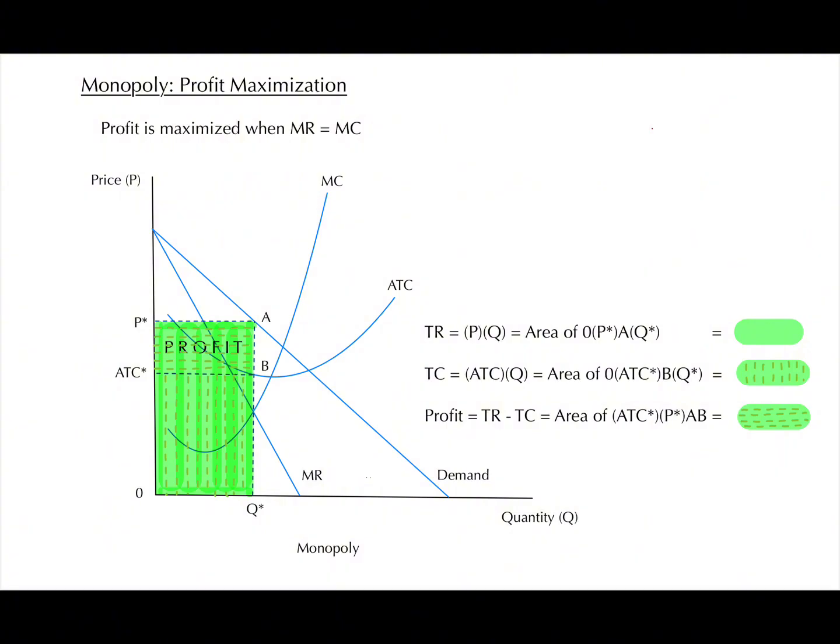To find the equilibrium price, we need to find the point on the demand curve at Q-star. To find ATC, we need to find the point on the ATC-star curve at Q-star.